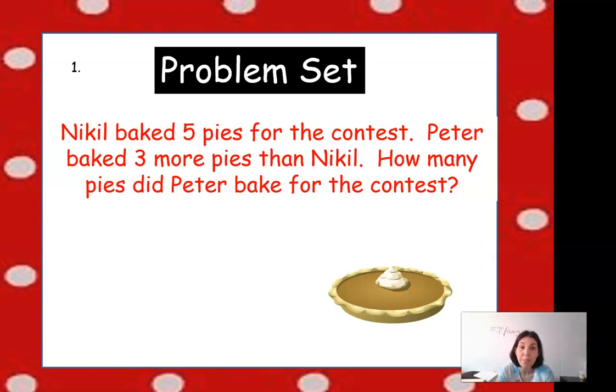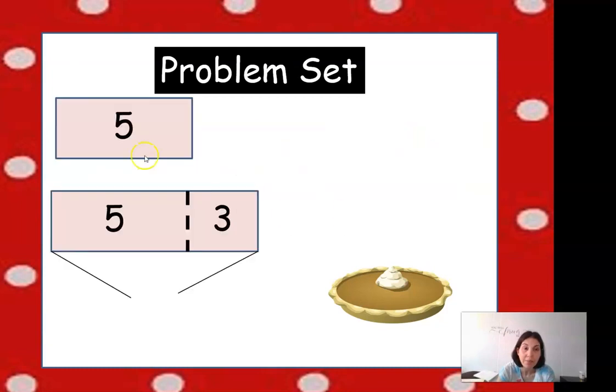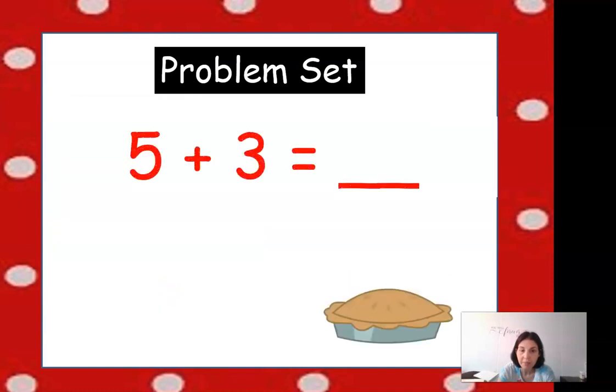Nicole baked 5 pies for the contest. Peter baked 3 more pies than Nicole. How many pies did Peter bake for the contest? So we have 5 for Nicole. Nicole did 5, and then Peter did 5 and then 3 more. So they showed the same size rectangle for 5 and then another box with 3 more. And we need to figure out what's the total for Peter. 5 plus 3 equals 8. So Peter baked 8 pies.